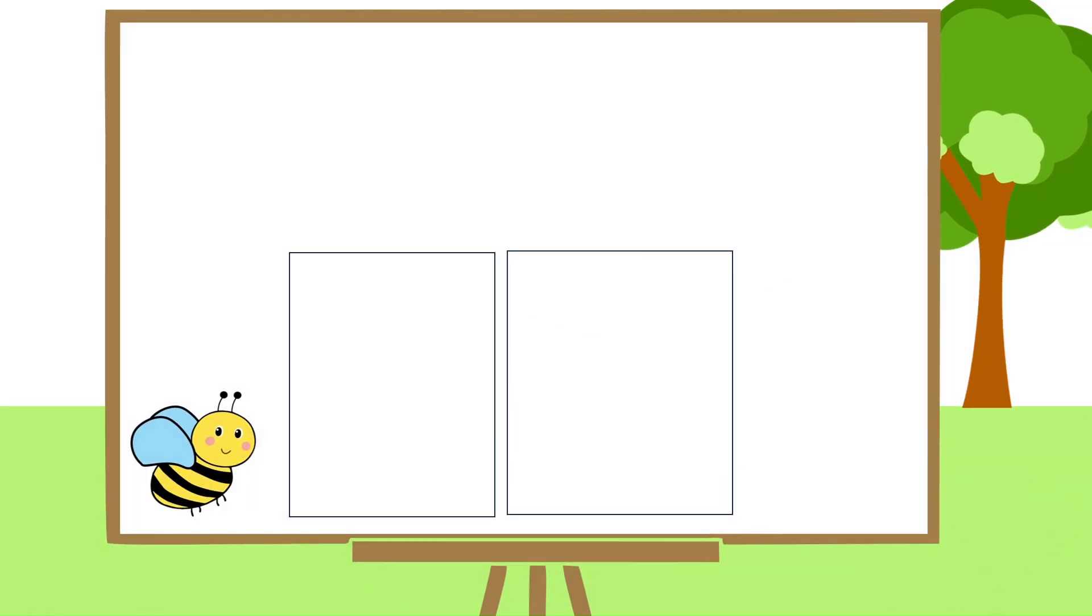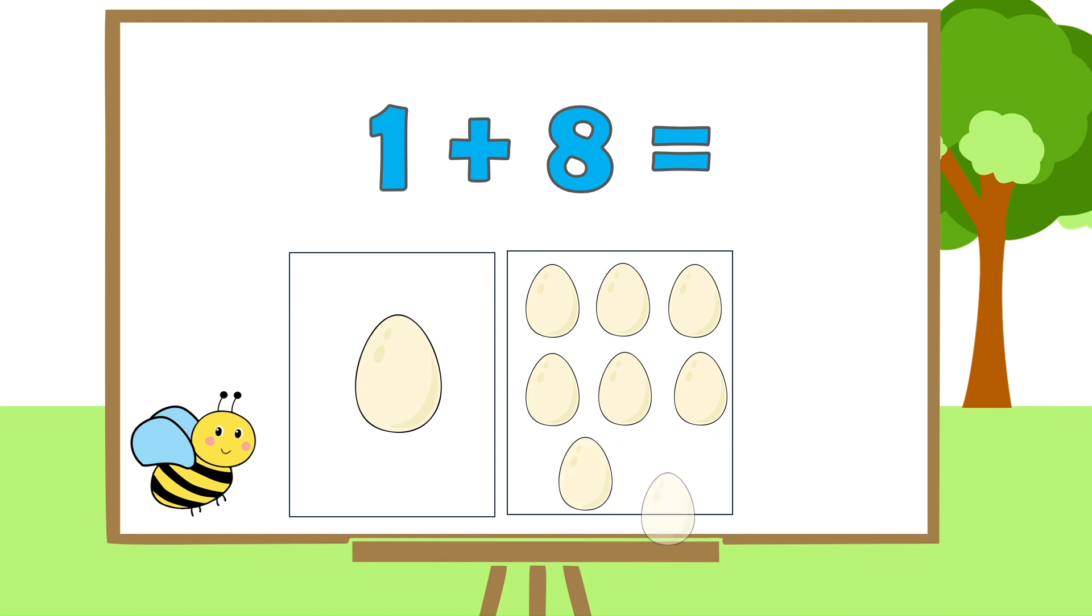Here's the next one. 1 plus 8. So, 1 egg under the number 1. And 8 eggs under the number 8. That's right! So, 1 plus 8 is? 9. Excellent!